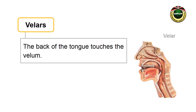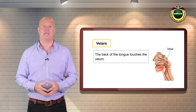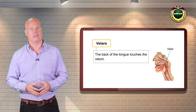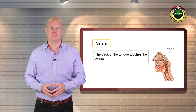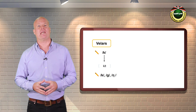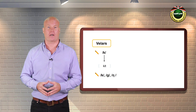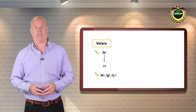Velars. Velar sounds are produced when the back of the tongue touches the velum, as when you produce the first sound in kit, as illustrated in the diagram. The velar consonants that occur in English are k, g, and ng.